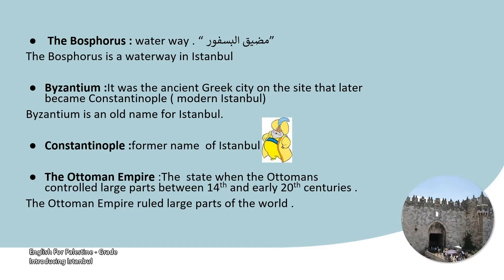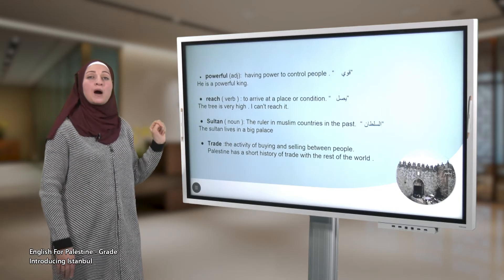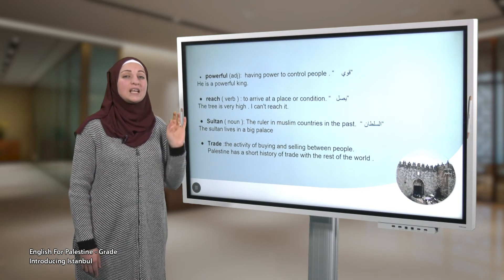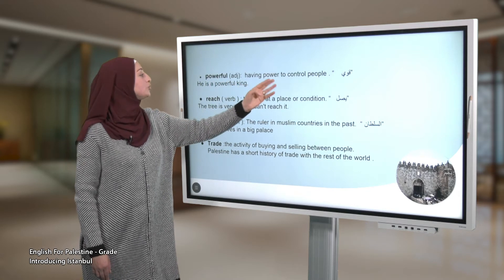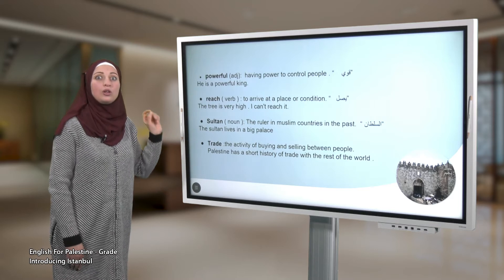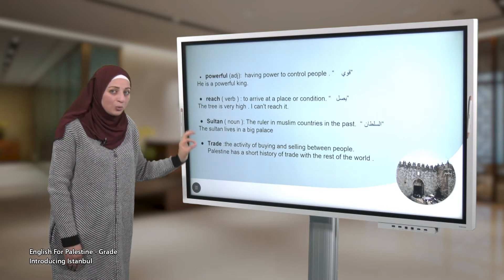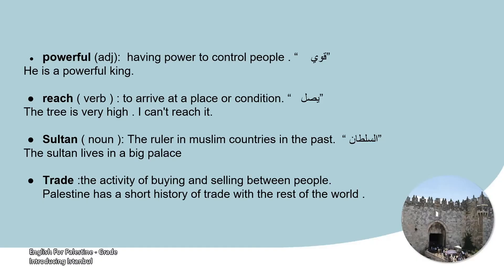Next word: powerful. The part of speech is adjective, meaning having power to control people. Example: he is a powerful king. Reach is a verb meaning to arrive at a place or condition. Example: the tree is very high, I can't reach it. Sultan is a noun meaning the ruler in Muslim countries in the past. Example: the Sultan lives in a big palace. Trade is the activity of buying and selling between people. Example: Palestine has a short history of trade with the rest of the world.